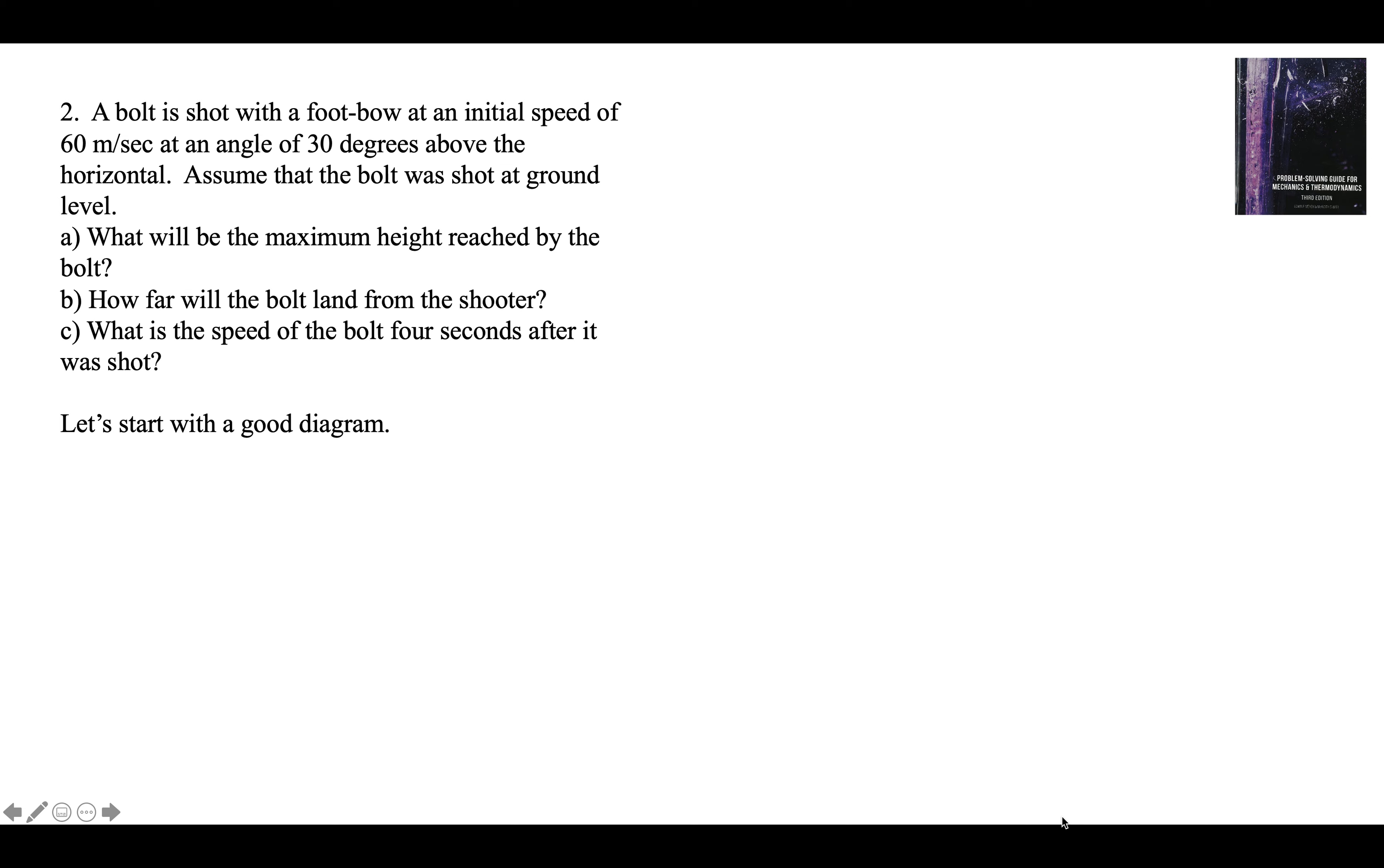Let's start with a good diagram. First, let's draw the path. There's the initial speed, 60 meters per second at 30 degrees. Part A asks for the maximum height. Part B asks for the distance from the shooter. Part C asks for the speed of the bolt four seconds after it was shot.